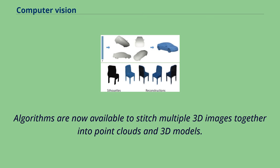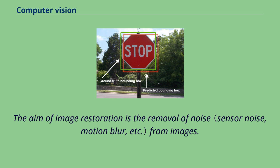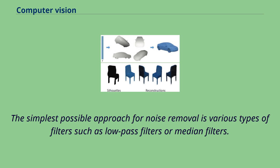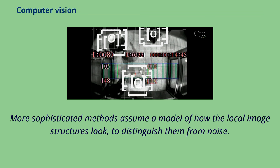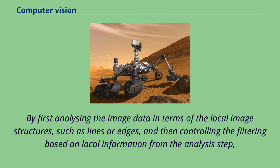The aim of image restoration is the removal of noise from images. The simplest possible approach for noise removal is various types of filters such as low-pass filters or median filters. More sophisticated methods assume a model of how the local image structures look to distinguish them from noise. By first analyzing the image data in terms of local image structures such as lines or edges, and then controlling the filtering based on local information from the analysis step, a better level of noise removal is usually obtained. An example in this field is inpainting.